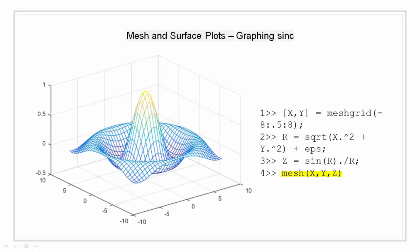EPS with no argument is the distance from one to the next larger double precision number. That is EPS with no argument returns 2 raised to power minus 52. Now I will be evaluating the sinc of r and populate it in variable z. The mesh plot of x, y and z is shown.